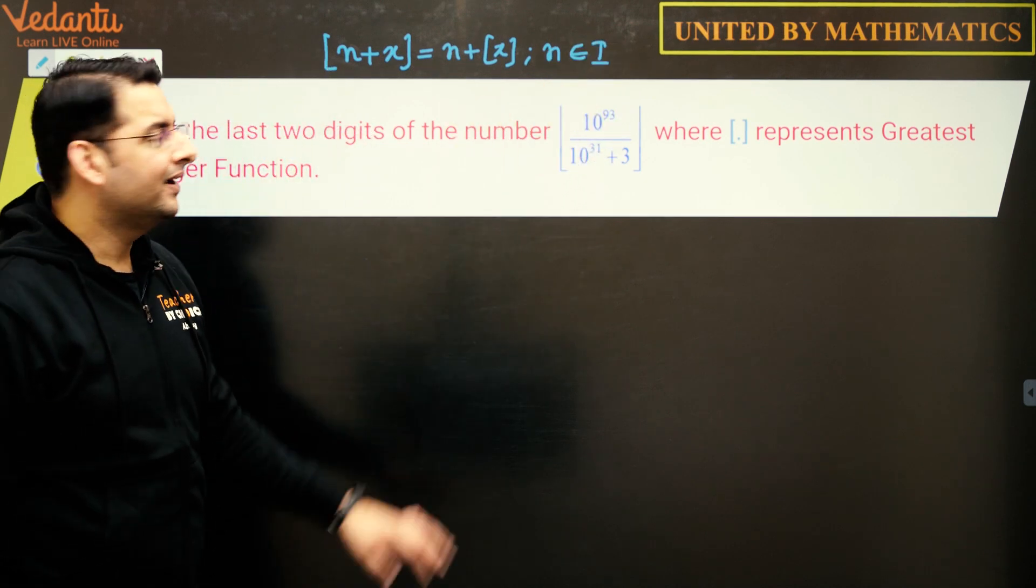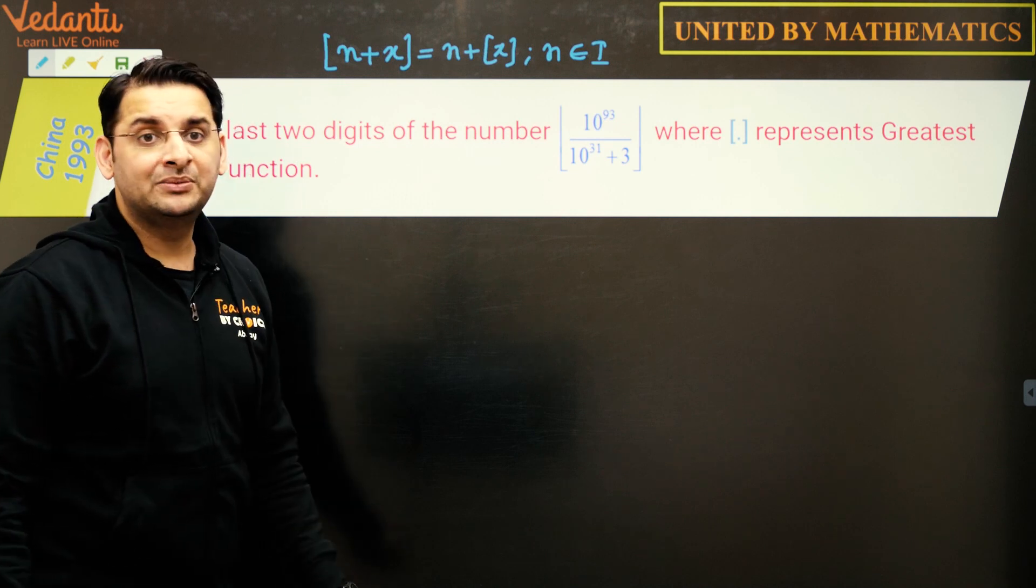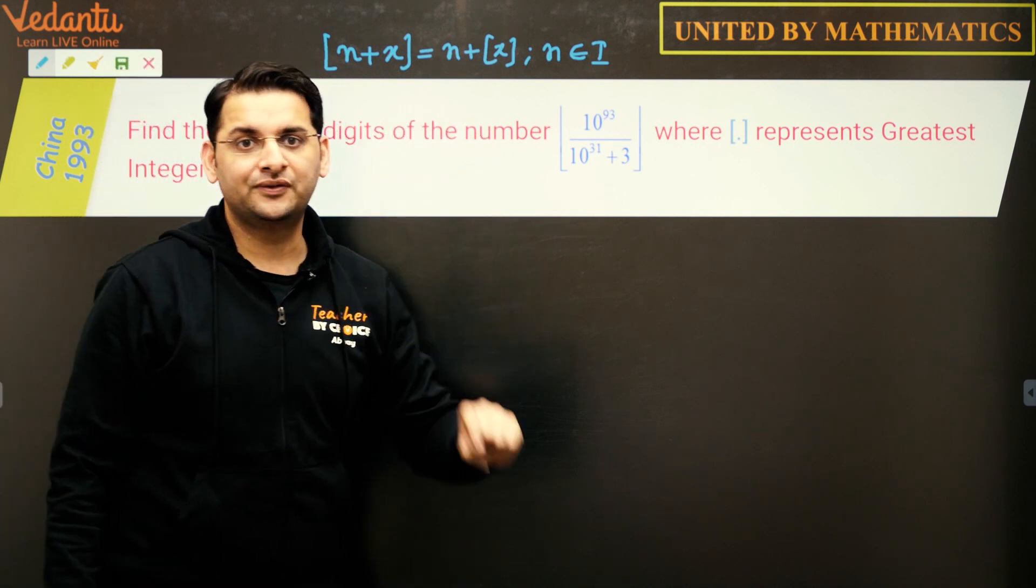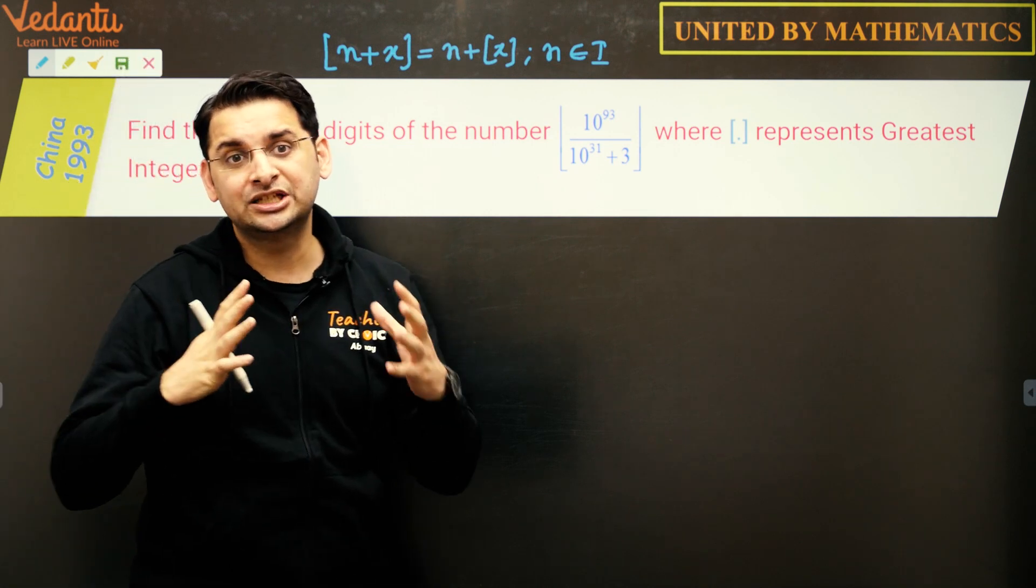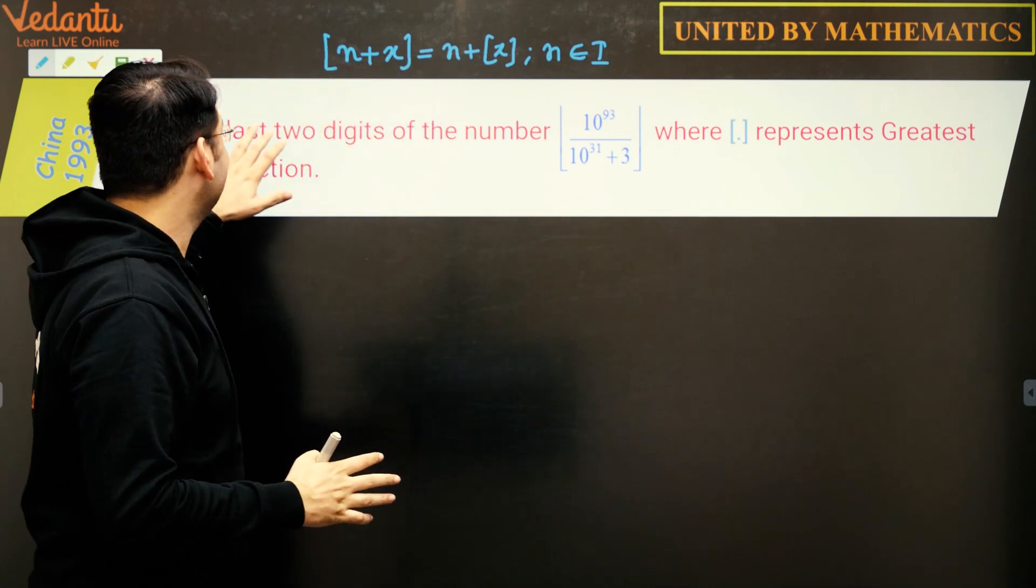This can be easily proved. So greatest integer of n plus x is n plus greatest integer of x where n is an integer.